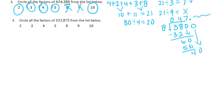Now we're going to do the same thing for 322,875. For divisibility by 2, it needs to end in 0, 2, 4, 6, or 8. It ends in a 5, so it's not divisible by 2.